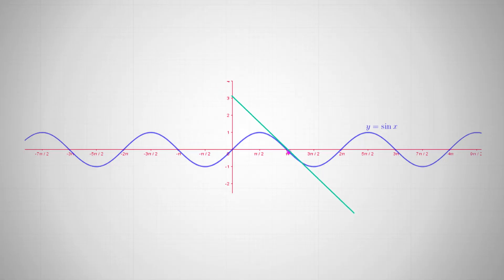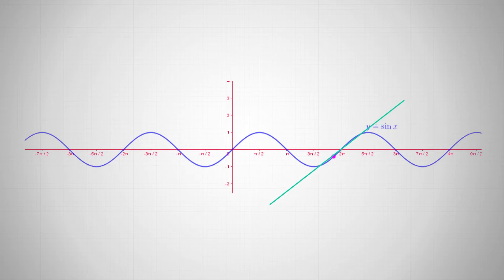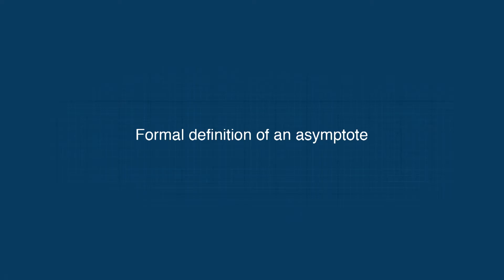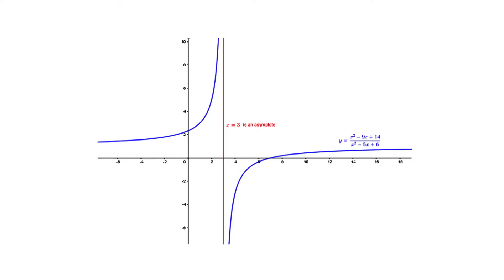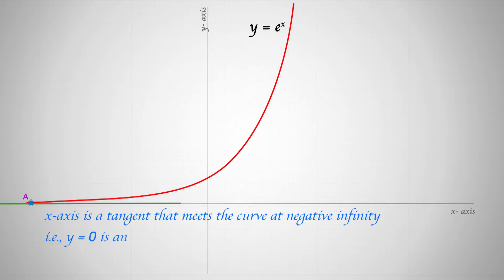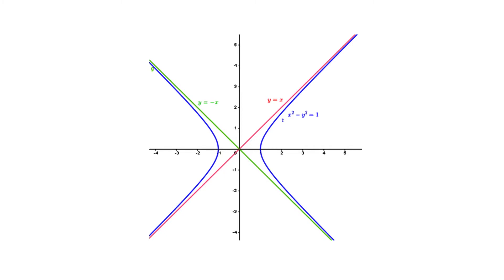There are curves which do not have any asymptotes. For example, y = sin x has no asymptote. Now let us see the formal definition. An asymptote of a curve is a straight line at a finite distance from the origin to which a tangent to the curve tends as the point of contact recedes to infinity. We classify asymptotes into three classes: vertical asymptotes, horizontal asymptotes, and oblique (or slant) asymptotes.